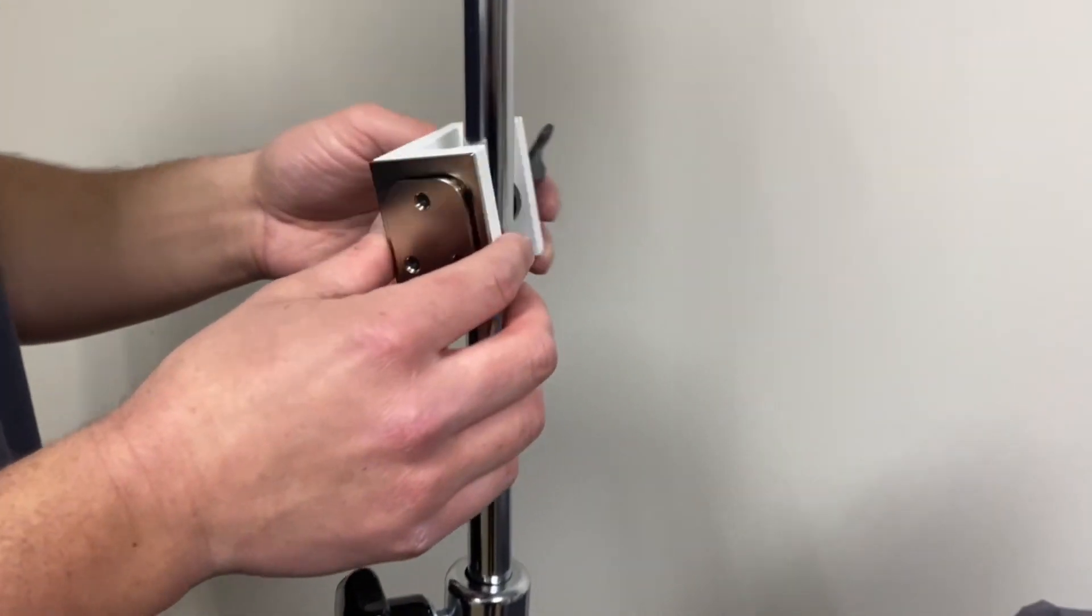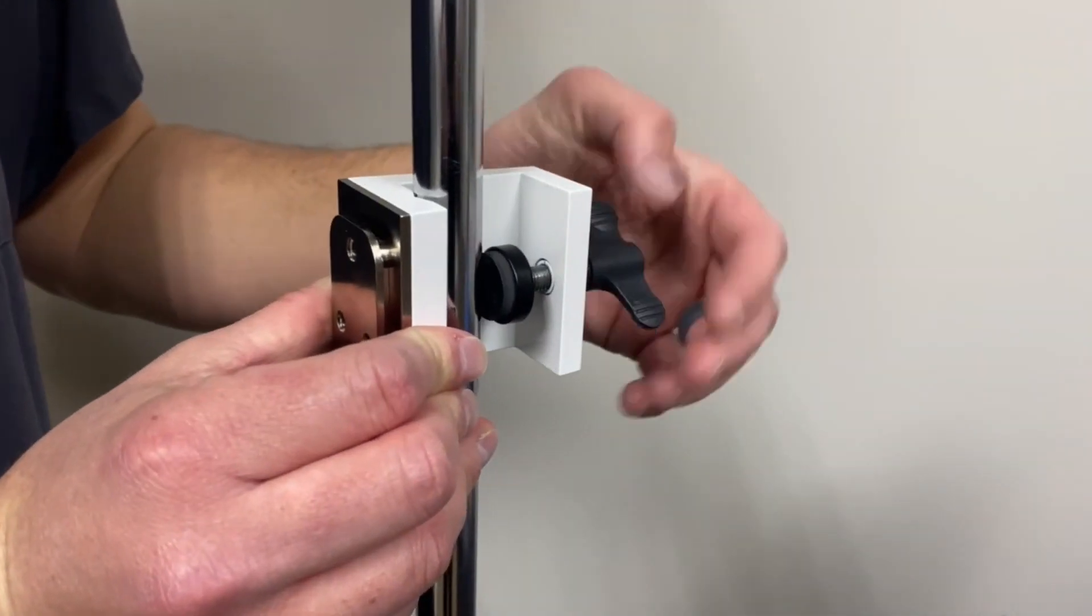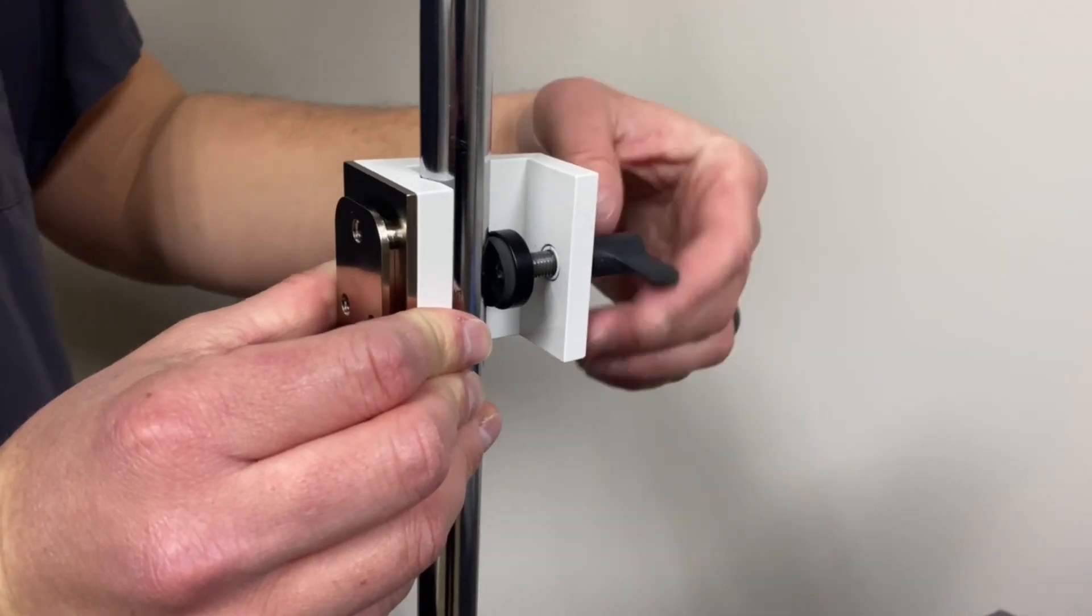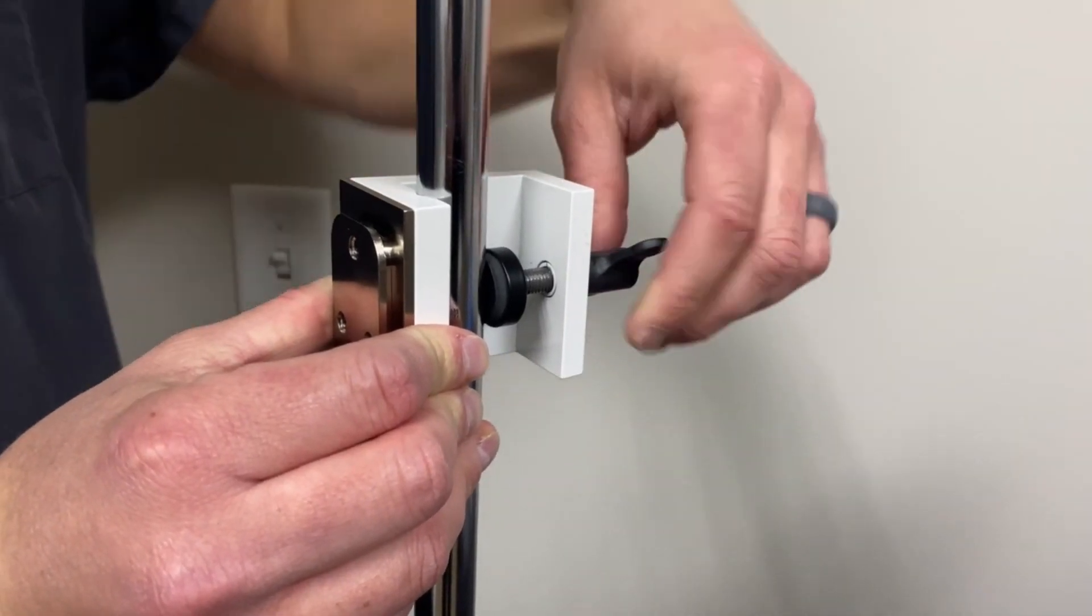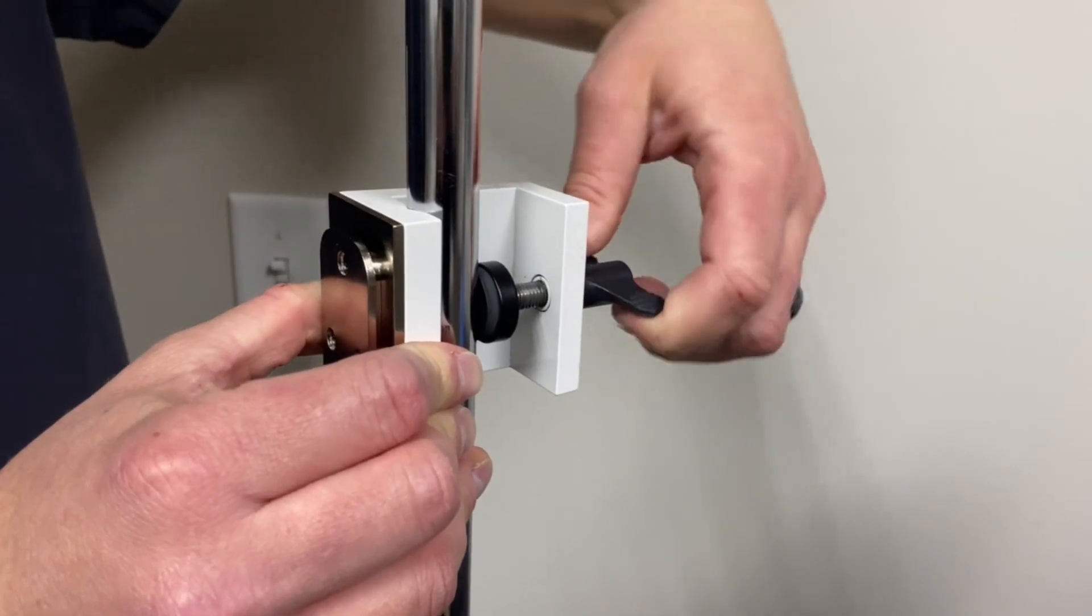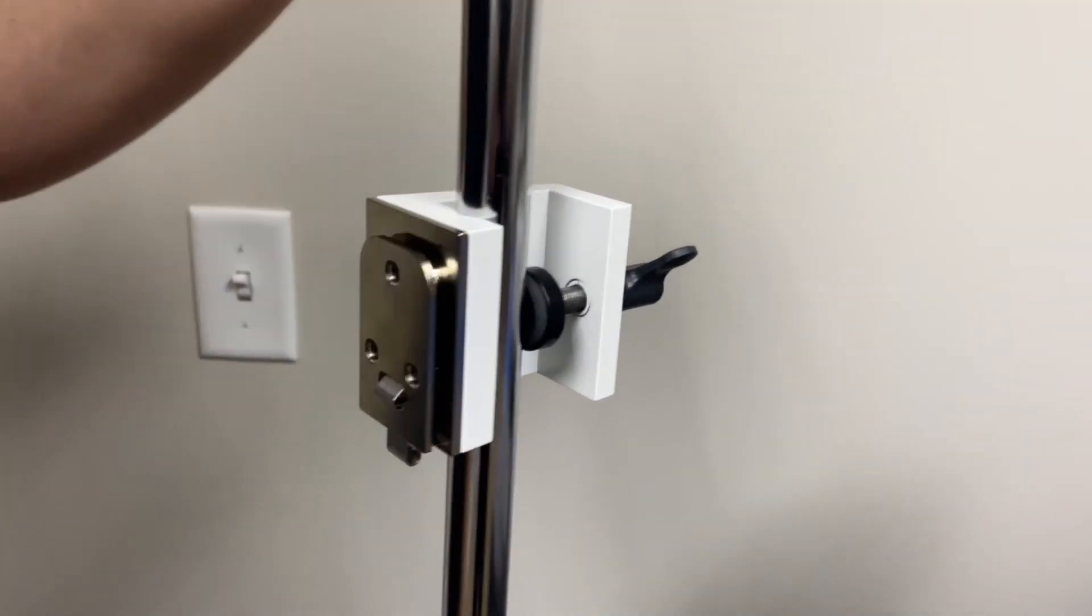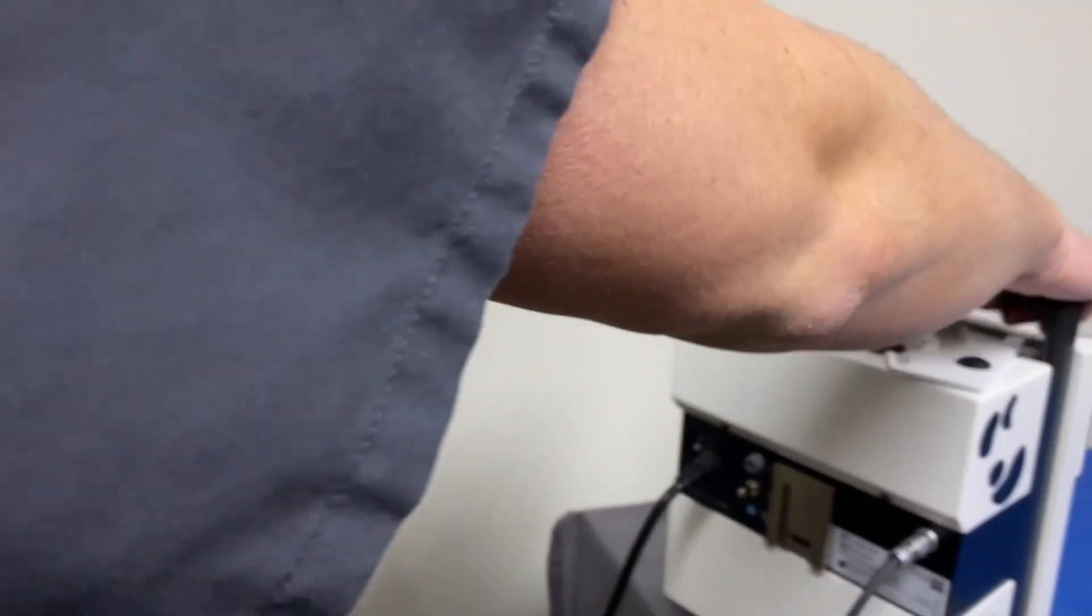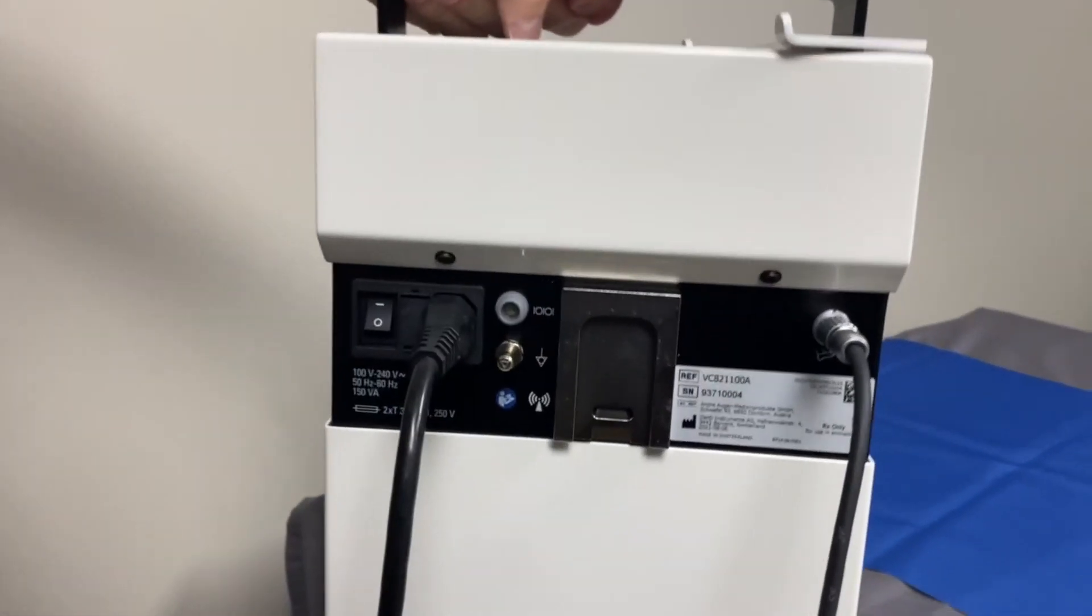To set up the device, you can either place the Alaxos 3 onto an IV pole or onto a counter next to the surgical table. If you're attaching it to an IV pole, fasten the locking mechanism onto the IV pole. Ensure that it is screwed tightly into place. Place the machine onto the locking mechanism, ensuring that it locks into place. You'll hear a click.